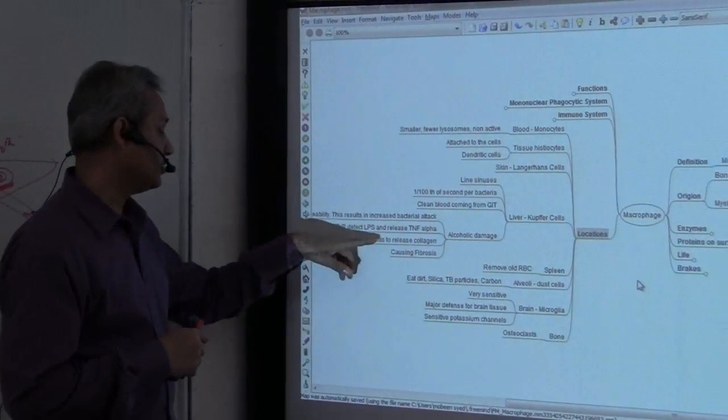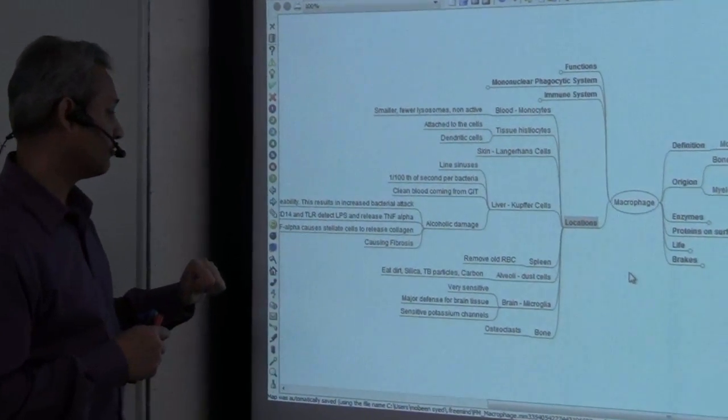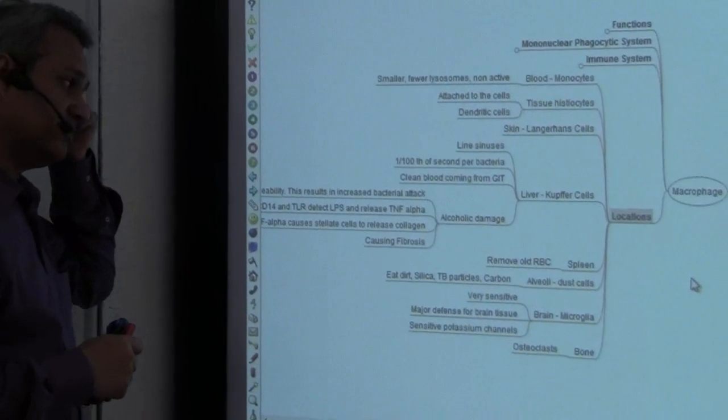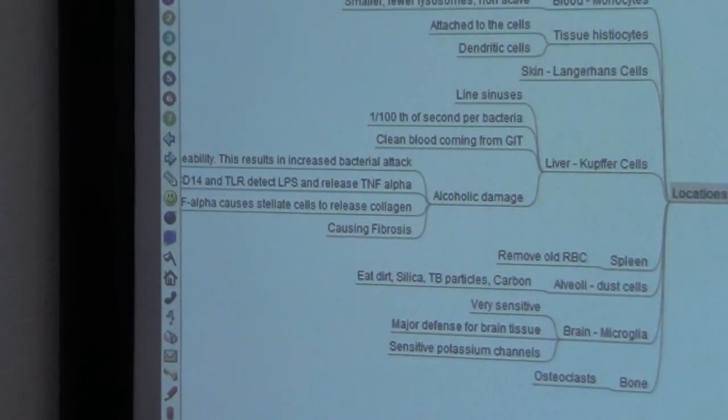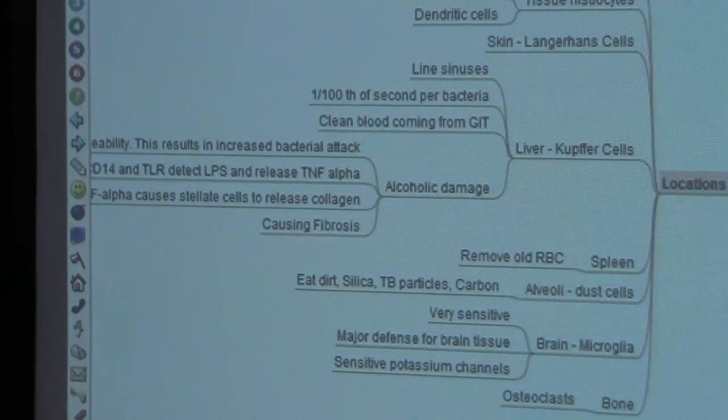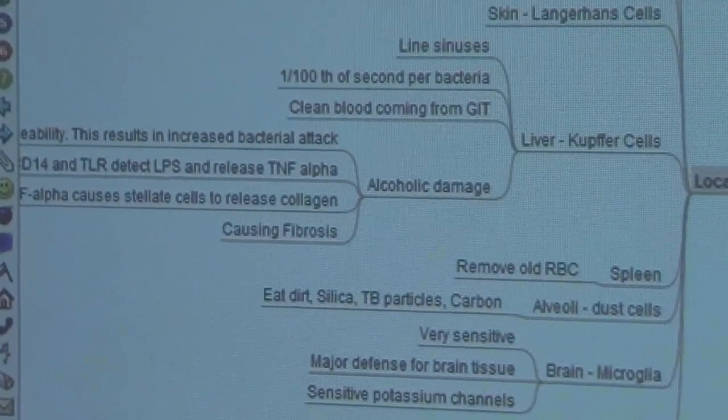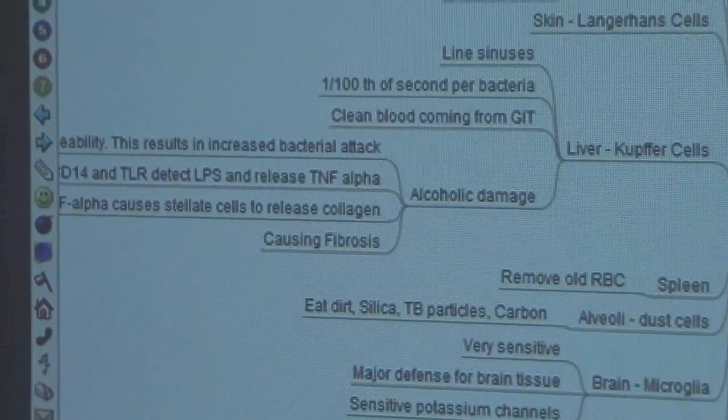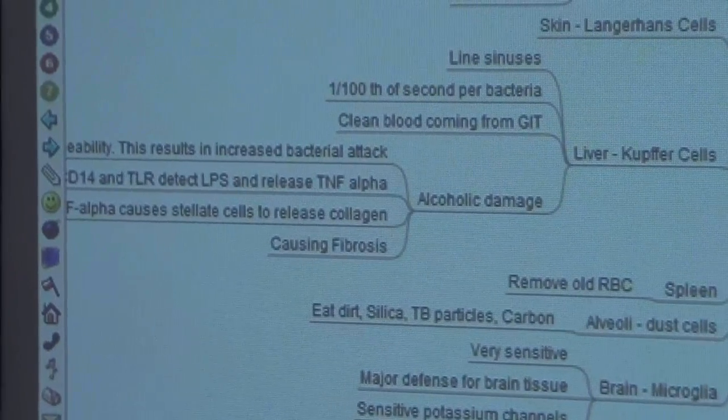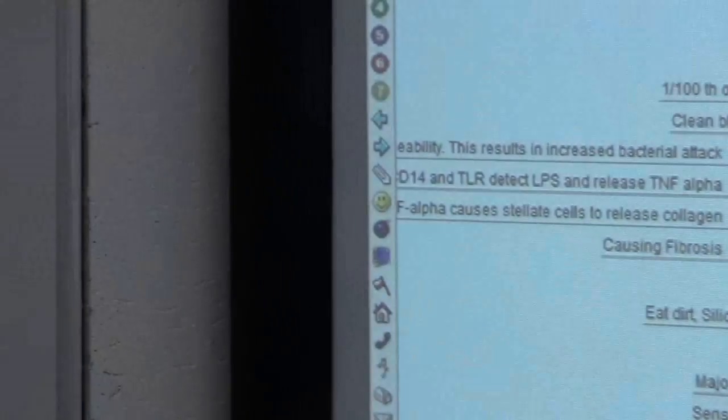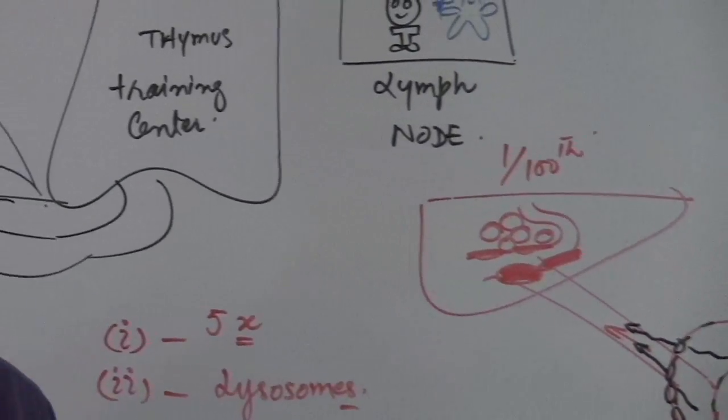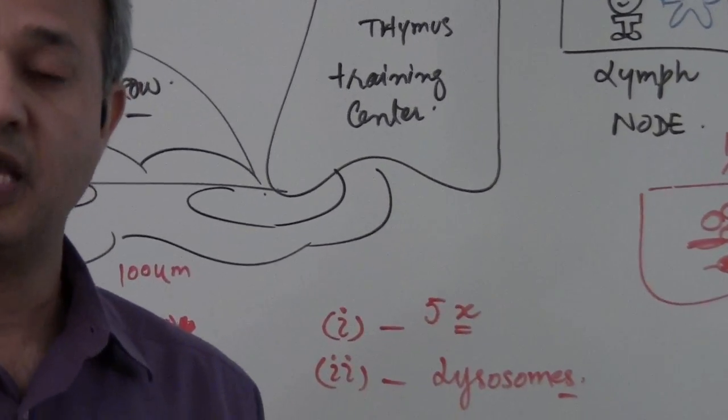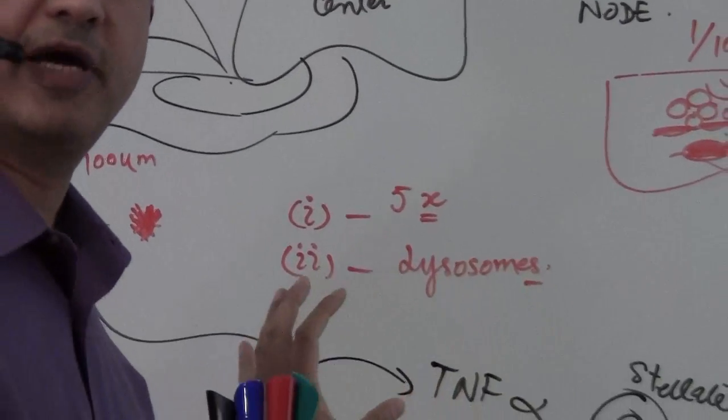Is that tumor necrosis factor alpha or tumor growth factor? I think it is tumor necrosis factor. So I will change this to tumor necrosis factor alpha. That is the damage in an alcoholic due to the alcohol itself and the role of the macrophages present.